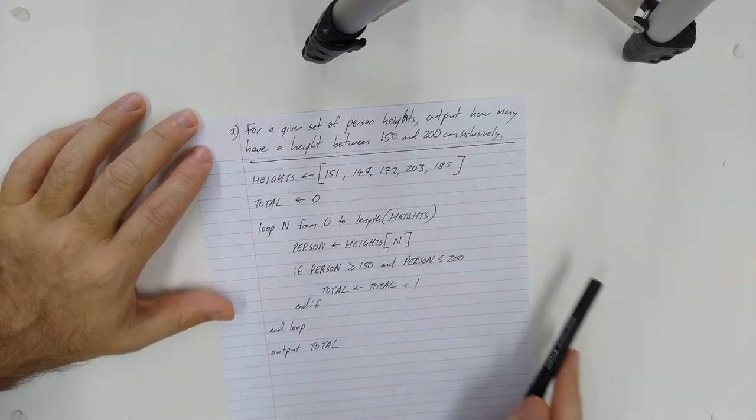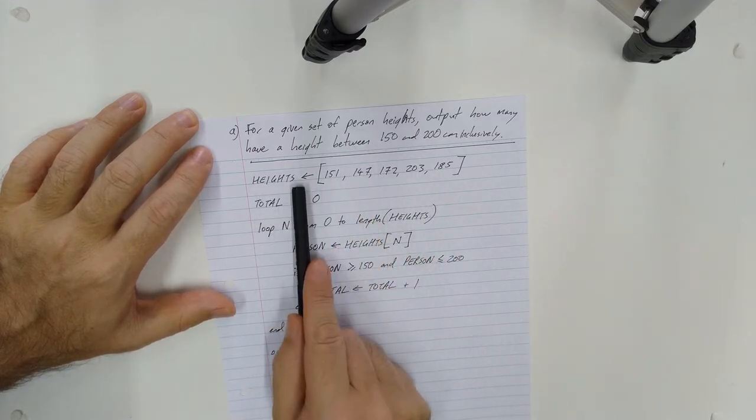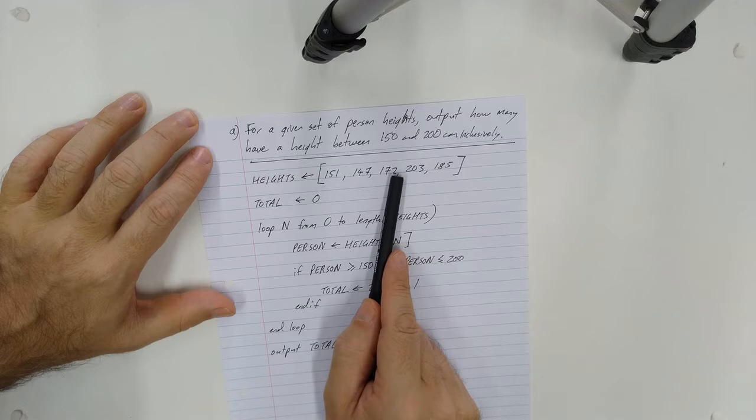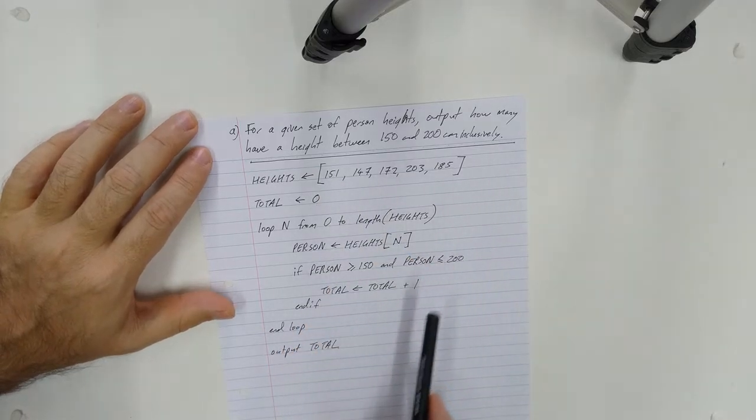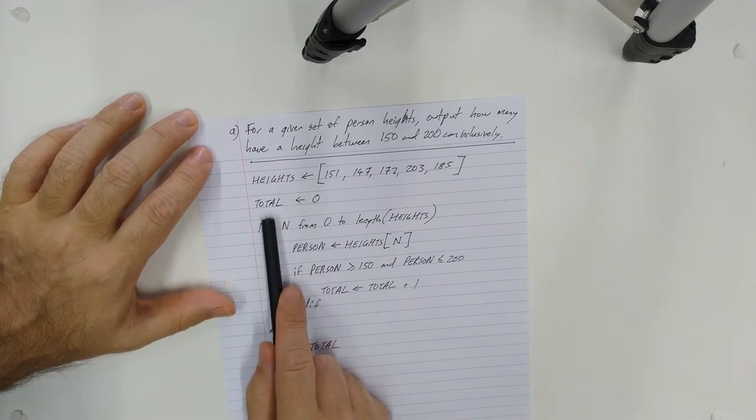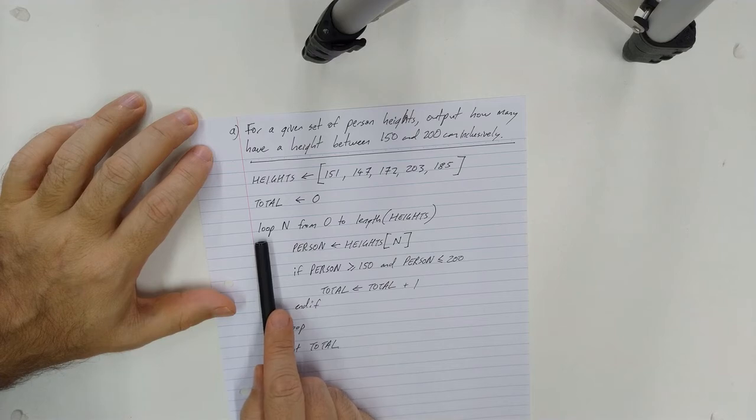So I've written up an example solution here. I've created a heights array, so in theory actually this part would probably come with the question, here's a set of heights for you to test it out on. And I've created a total variable and I'm setting that, initializing that to zero and then I'm saying let's loop.